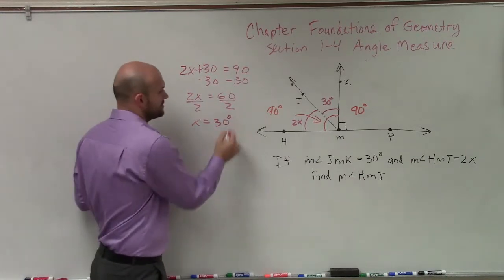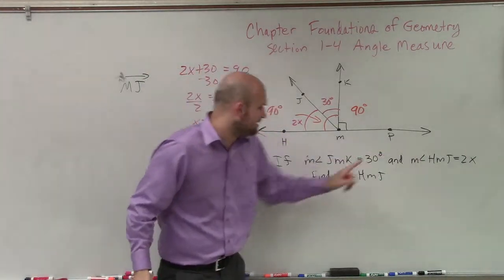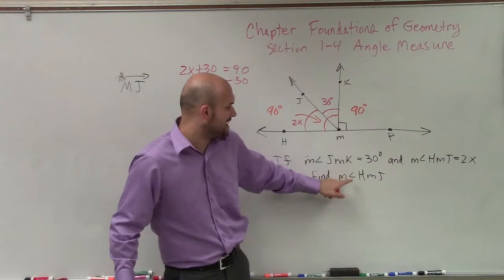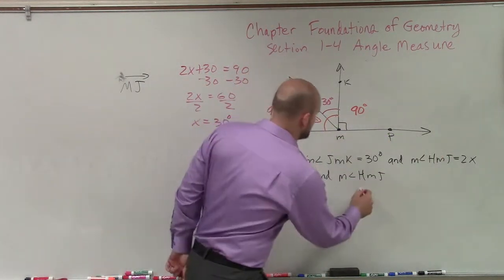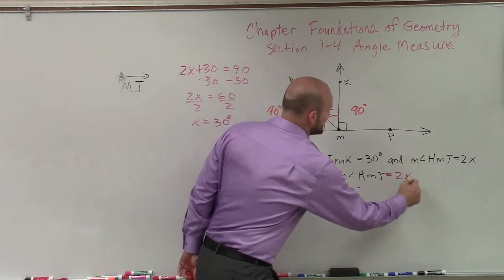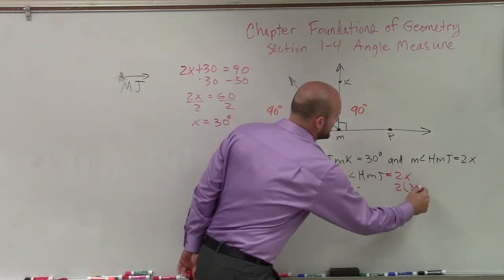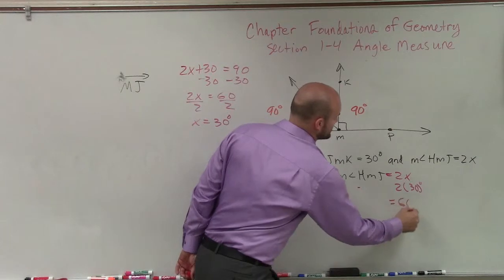Now, x equals 30 degrees. My question is saying find the measure of angle HMJ. And measure of angle HMJ is 2x. So therefore, 2x equals 2 times 30 degrees, which equals 60 degrees.